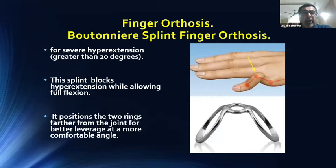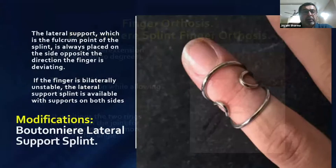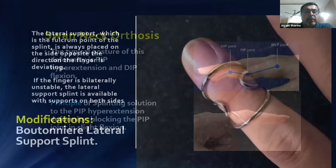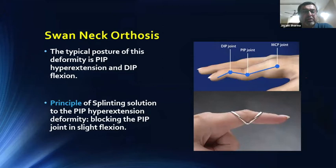Commonly seen deformities in the rheumatoid hand are boutonniere and swan neck deformity. For boutonniere deformity with severe hyperextension greater than 20 degrees, a finger ring double-ring type orthosis is used. This splint blocks hyperextension while allowing full flexion, positioning the two rings farther from the joint for better leverage at a comfortable angle. The lateral support is the fulcrum. The point of the splint is always placed on the side opposite to the direction the finger is deviating. If the finger is bilaterally unstable, a lateral support splint with supports on both sides is available.